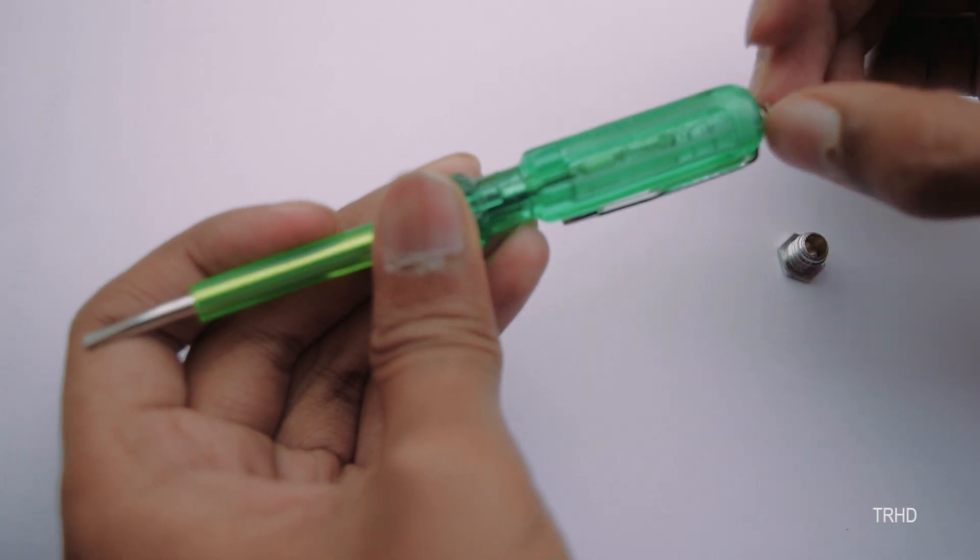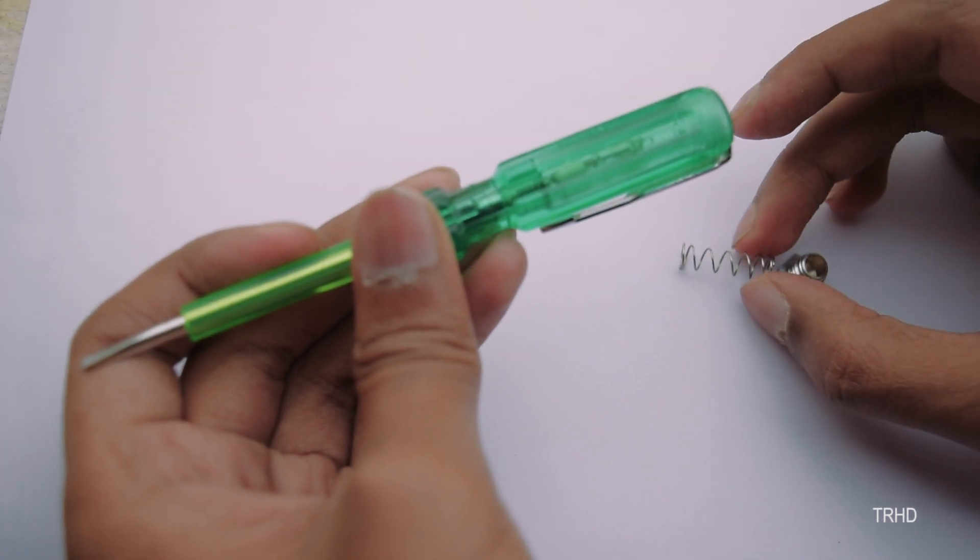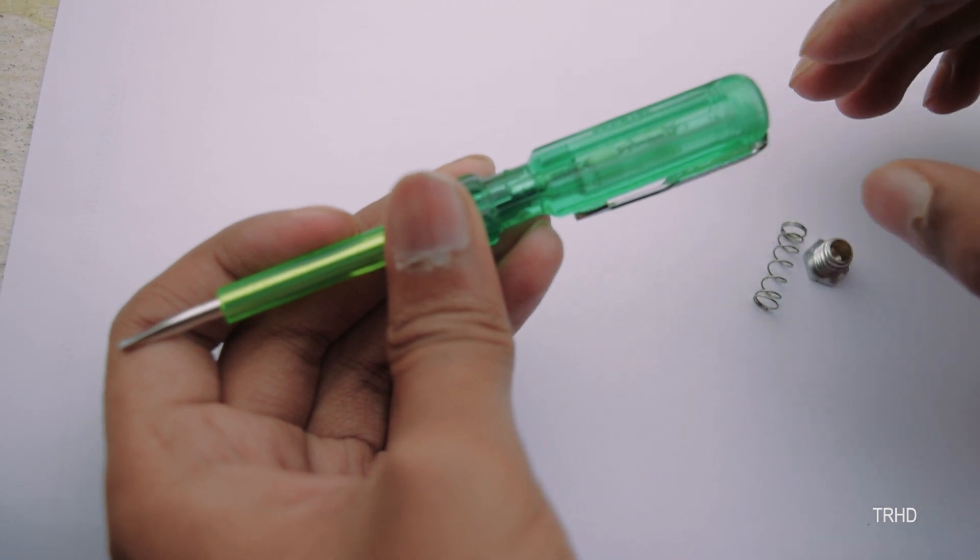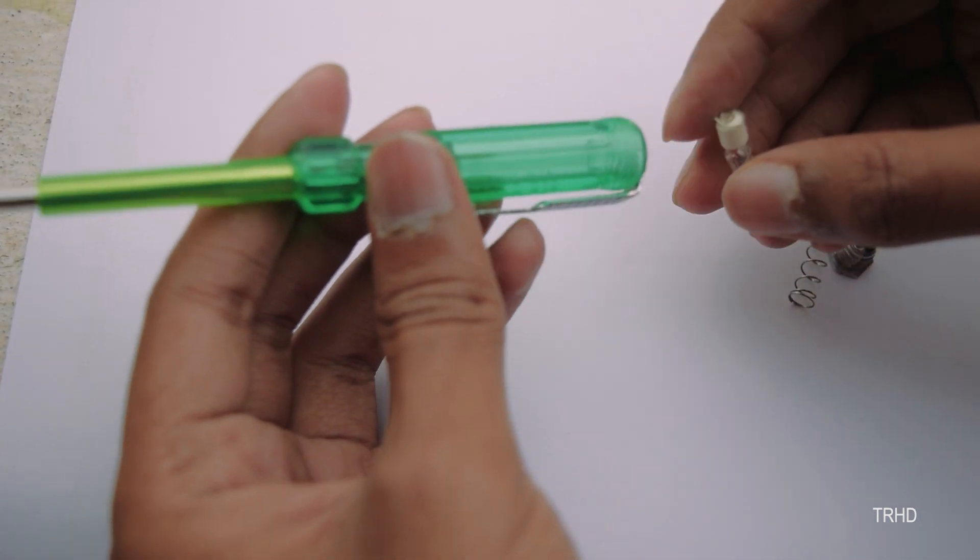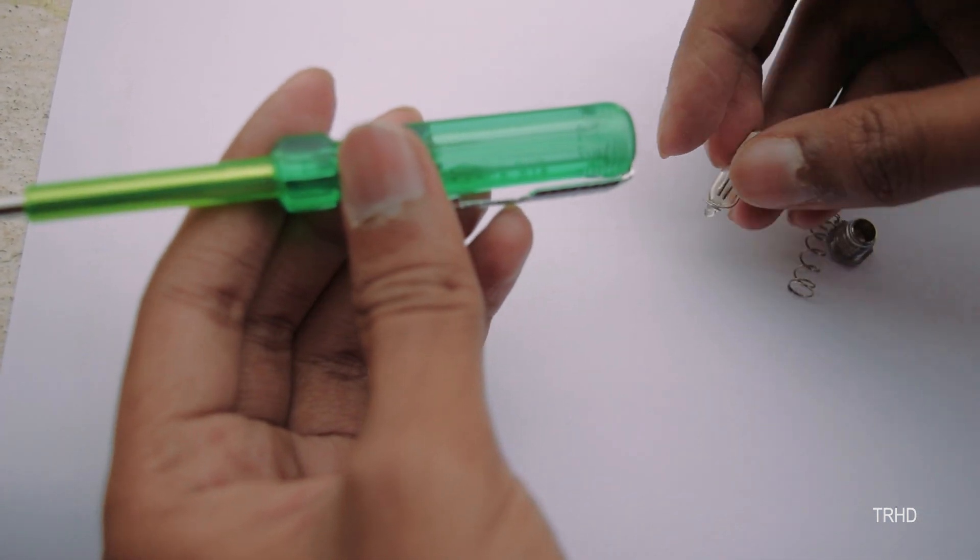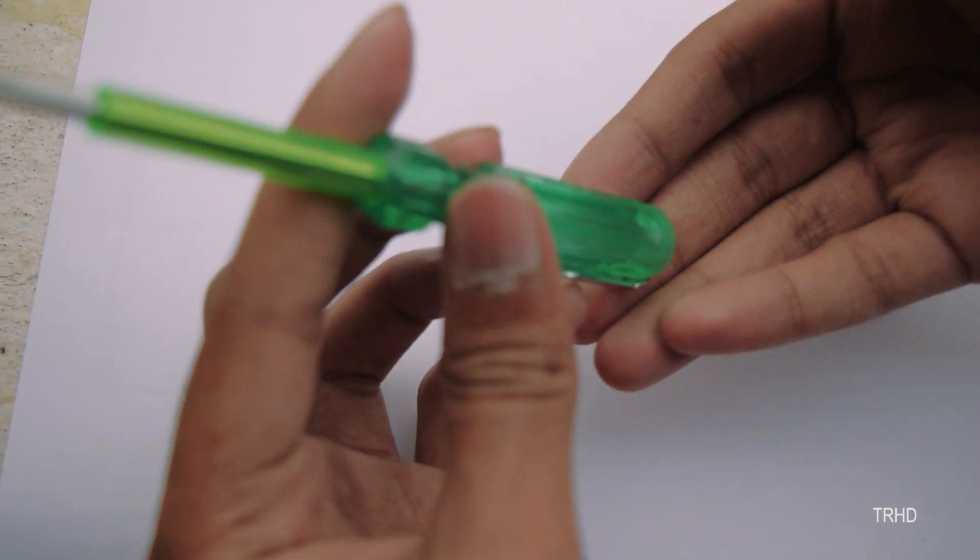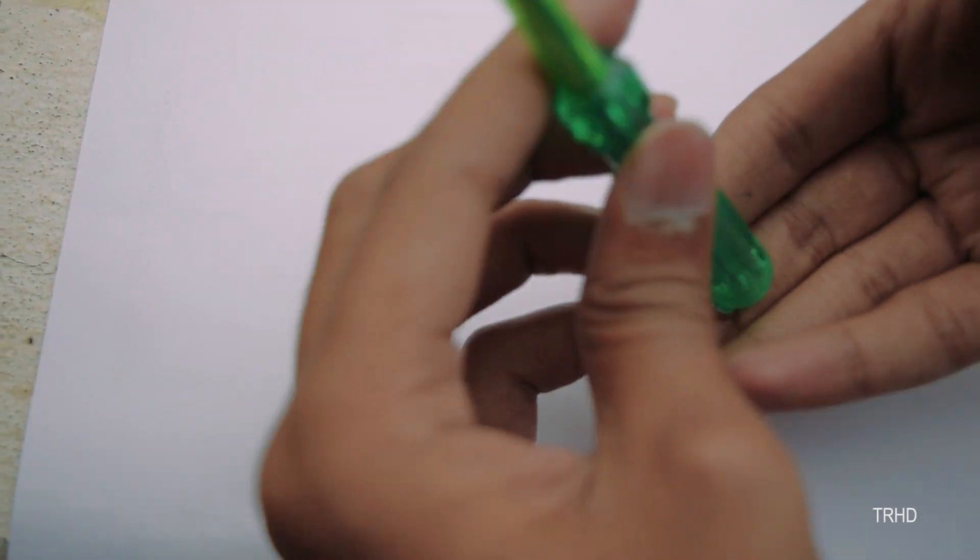And this is a spring which connects the neon lamp and the external contact. This is a neon lamp and there's a resistor in it which is usually a very large value one.